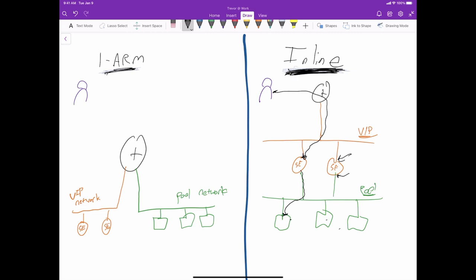The way the packet flow works in one arm is instead of going in line, you're going to hit your VIP network, and then you'll hit one of the service engines that it was hosted on. And then instead of routing through the service engine to a back end network,